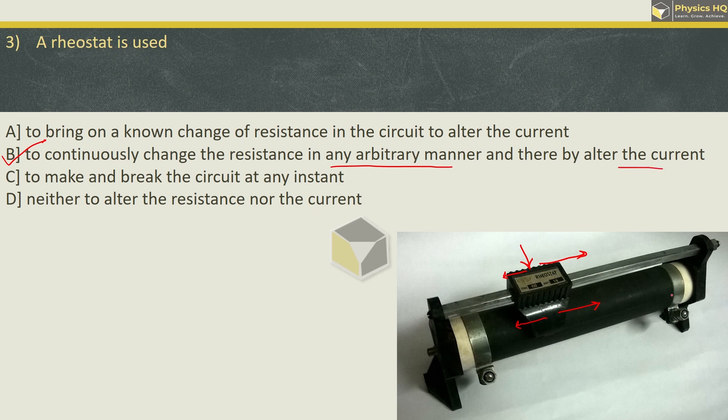So the correct option is option B: to continuously change the resistance in an arbitrary manner and thereby alter the current. Now if you change the resistance, then the current will change, right? We haven't selected the first option because there is change of resistance, but we don't know how much resistance is changing when you are sliding this.